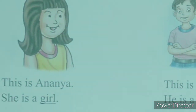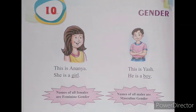Now let us read the sentences given in the book. The first sentence is: 'This is Ananya. She is a girl.' Here we can see that Ananya is a girl, and also denoted with the pronoun 'she'. In the previous chapter we already learned that the pronoun 'she' is used for female.